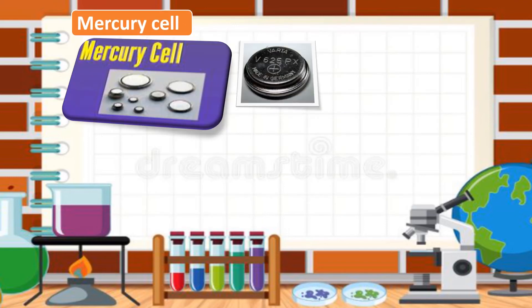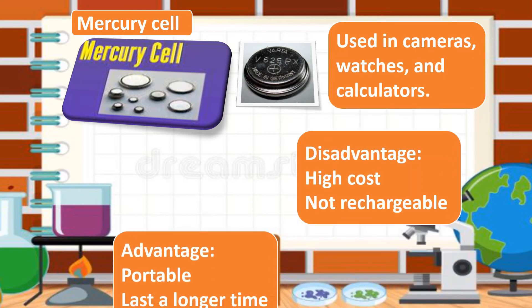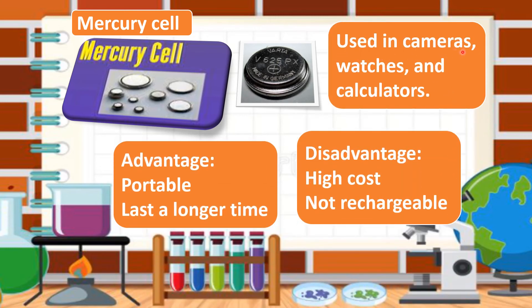Next, we have the mercury cell. It is used in cameras, watches, and calculators — so if you have a watch right now, it has a mercury cell. Advantage: it is portable and will last longer compared to the dry cell. Disadvantage: it is high cost and also not rechargeable, but you can use it longer compared to the dry cell.